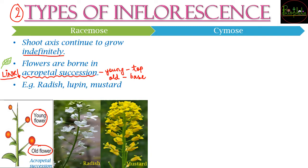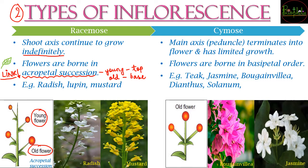This type of inflorescence with acropetal succession is called racimose inflorescence, found in examples like radish, lupin, and mustard. You can see in the images how the inflorescence is observed in racimose. Second is cymose inflorescence, where the main axis — called the peduncle — terminates into a flower. The key difference is that in racimose inflorescence there is indefinite growth and the end does not terminate into a flower, whereas in cymose inflorescence the main axis terminates into a flower.